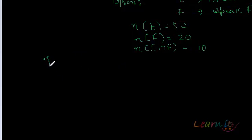What do we need to find out? We need to find how many people speak at least one of the two languages. That means how many people are actually there. We need to find out how many people can at least speak one of these languages. So we need to find out what is E union F.